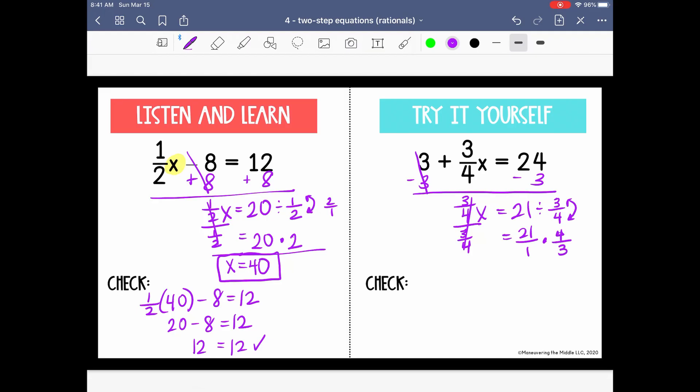We can cross-cancel here since 21 and 3 can both be divided by 3. So 3 divided by 3 is 1. And 21 divided by 3 is 7. So let's multiply our numerator. 7 times 4 is 28. 1 times 1 is 1. Okay, so a little messy here, but 28 over 1 is just 28.